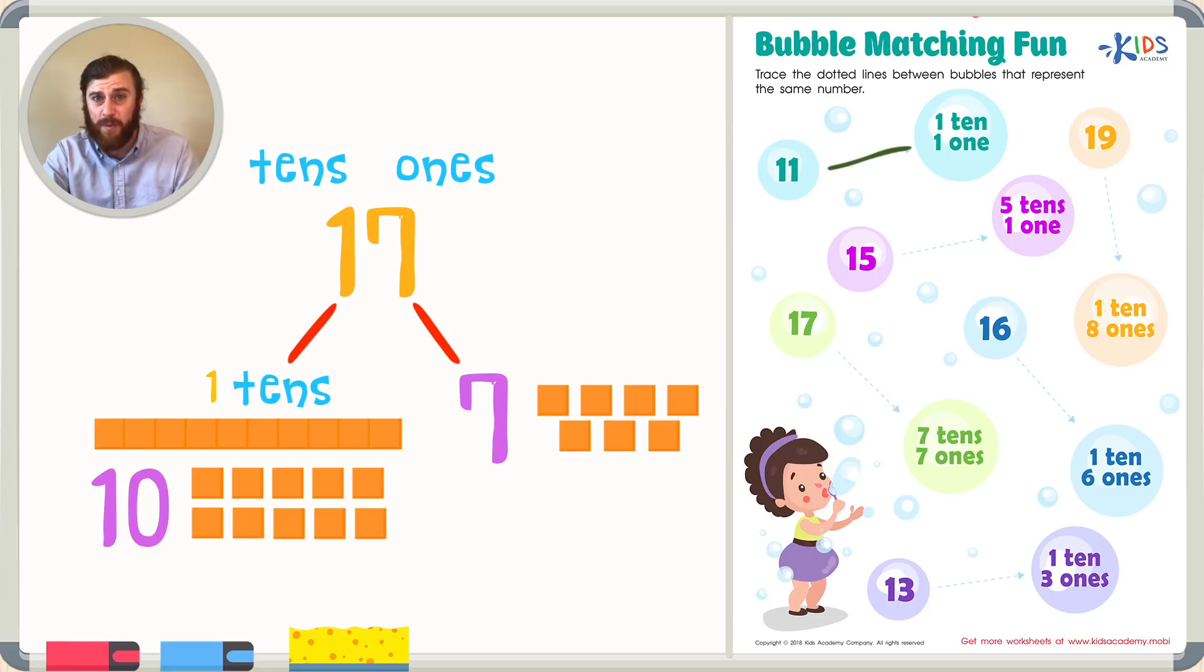So I know in this number 17, I have 1 ten and 7 ones. Again, let's check our answer choice. I see 7 tens and 7 ones. This is not the correct answer, so we should not trace on this dotted line.